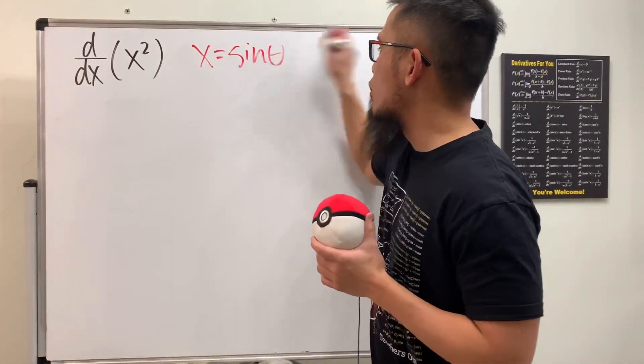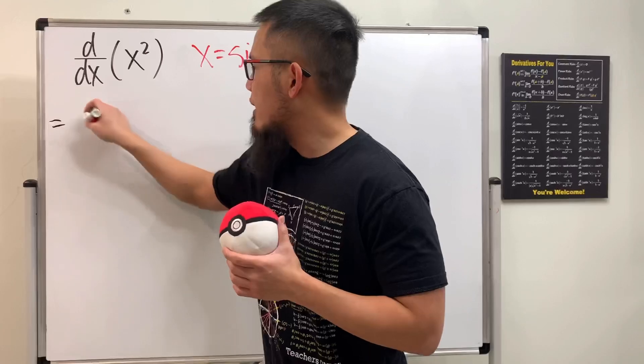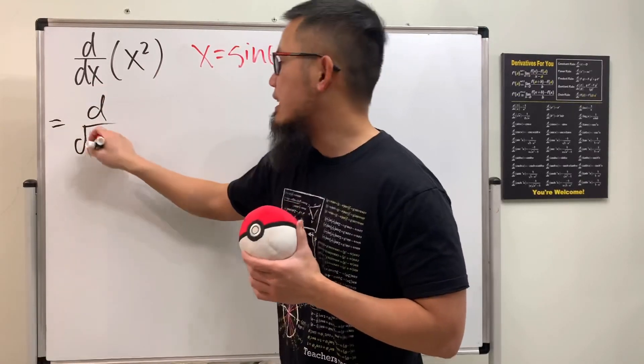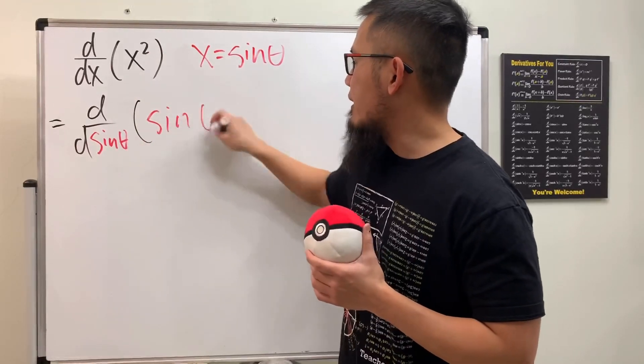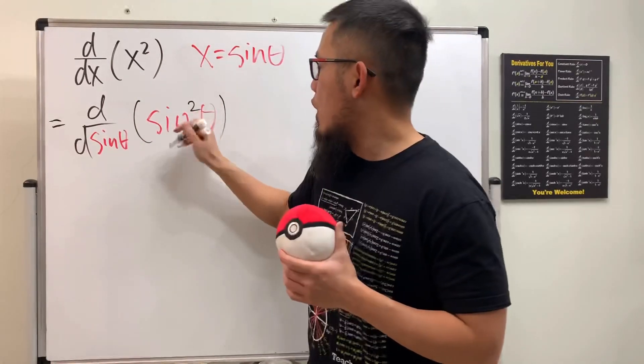And of course, let's plug in. So this right here is going to give us d/dx, and then x is sine theta. So just put that down. And then x is sine theta, and we have this to the second power.